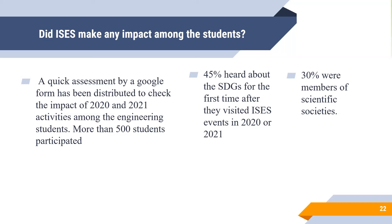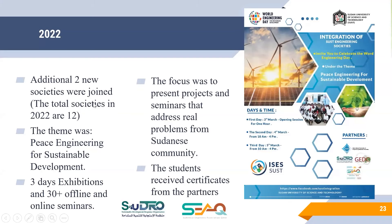A quick assessment for 2021 found that more than 500 students participated. 45 percent said they heard about SDGs for the first time through the integration activities, and only 30 percent were already members of scientific societies. In 2022 there were an additional two societies, bringing us to 12 societies. Activities expanded to three days of exhibitions with more than 30 offline and online seminars, new international contributors and partnerships, with projects and seminars addressing real problems from Sudanese communities.